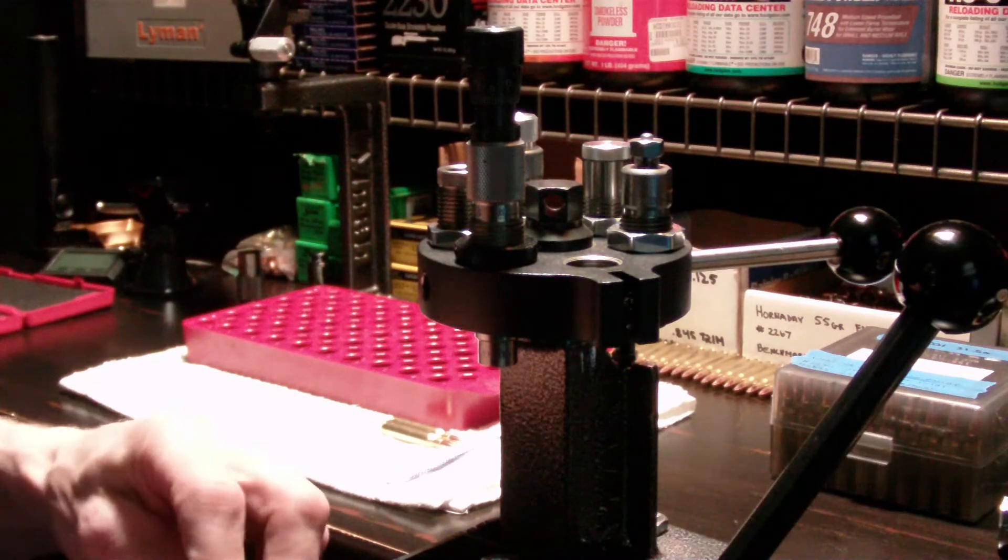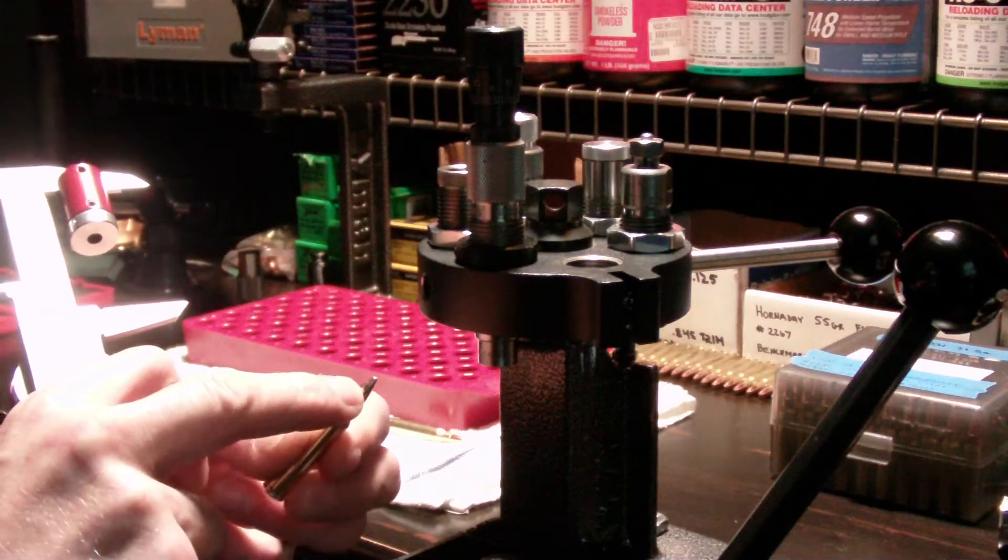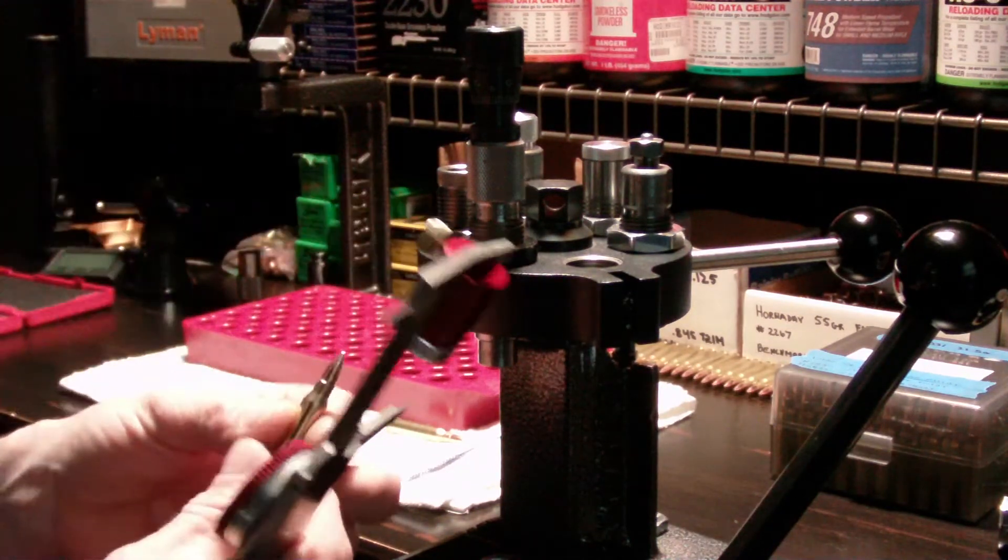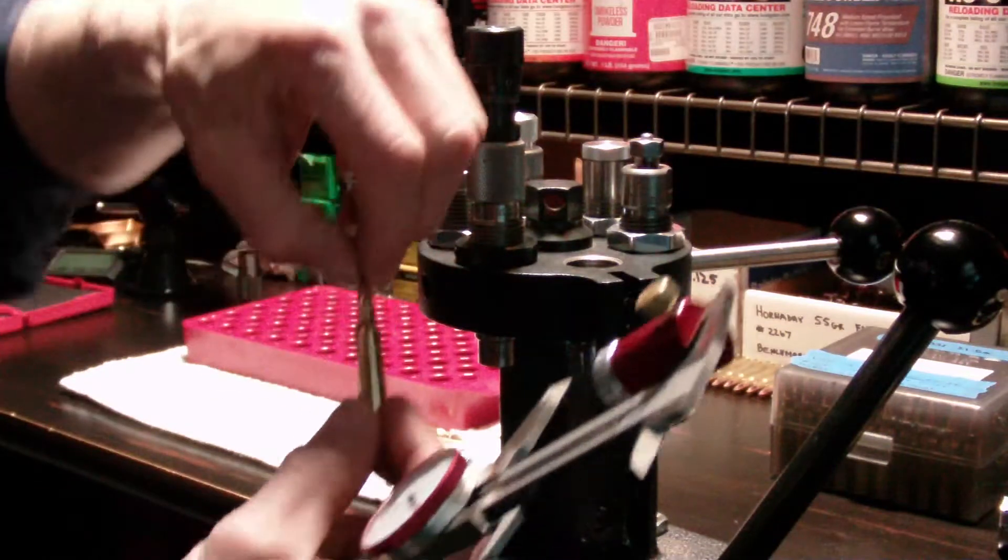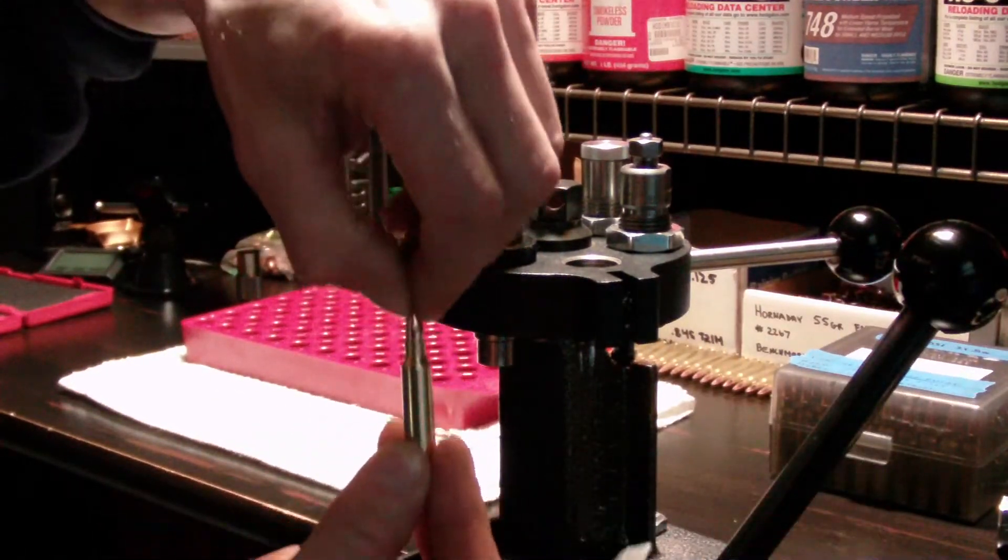Seeing as your bullet seating die does not press on the tip of the bullet, it presses on the ogive of the bullet. You can actually see the mark in the copper on every single bullet where the rod inside here is sitting over the tip of the bullet like right about there, and pushing the bullet into the brass.